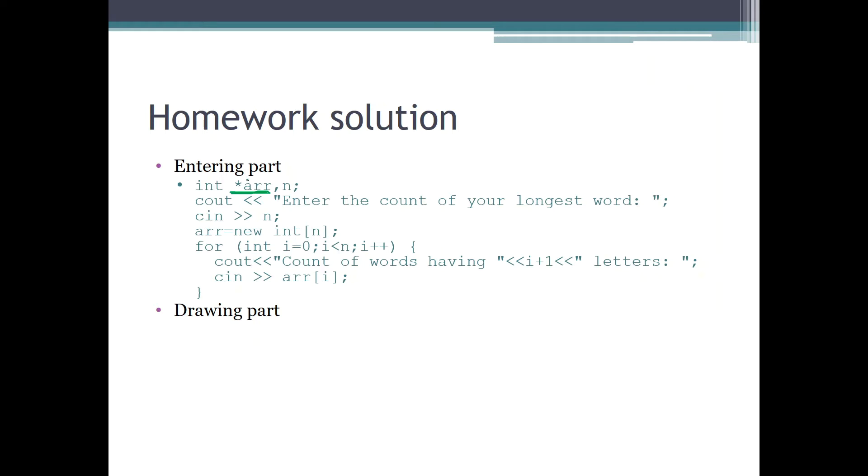Now the user enters n, and afterwards we can create the array in the memory. New int n creates the array in the memory and we assign this created memory space to our already existing variable, our pointer.